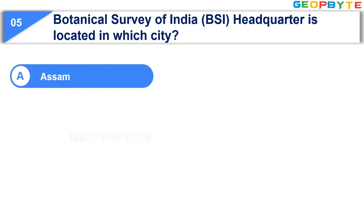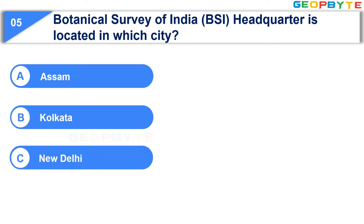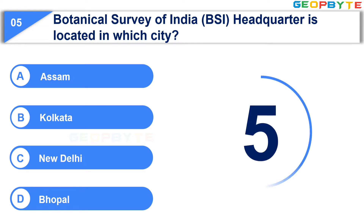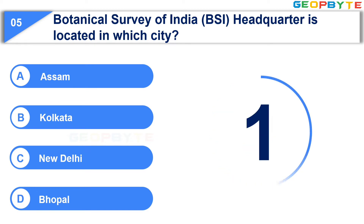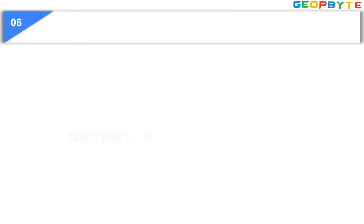The fifth question is: Botanical Survey of India (BSI) Headquarters is located in which city? Option A: Assam. Option B: Kolkata. Option C: New Delhi. Option D: Bhopal. Your time starts now. Your time is up and the correct answer is Option B: Kolkata.